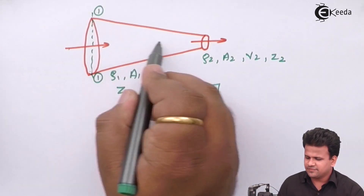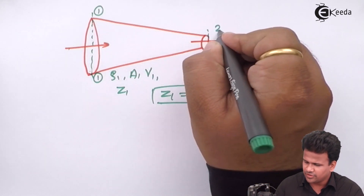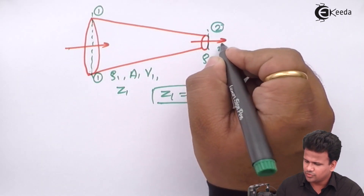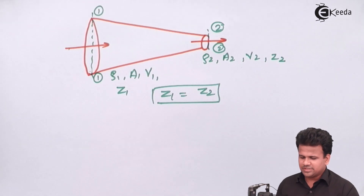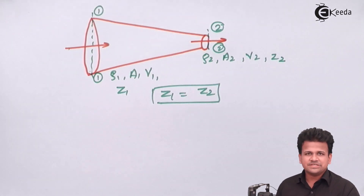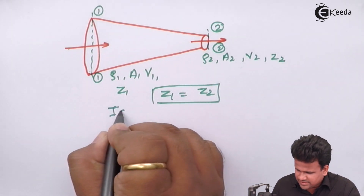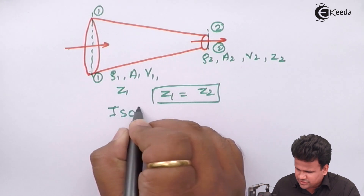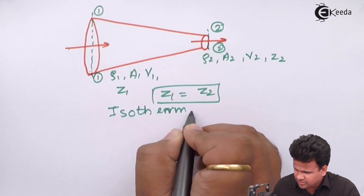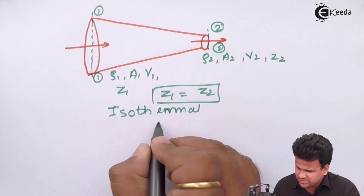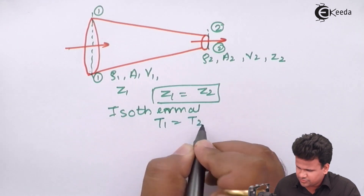The fluid is flowing from section 1-1 through to section 2-2. We note that it is an isothermal process, meaning T1 equals T2.